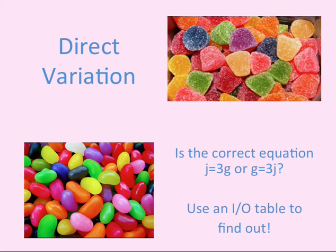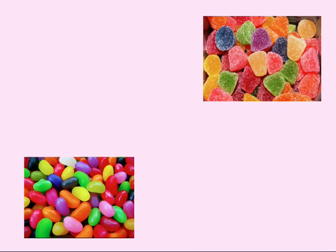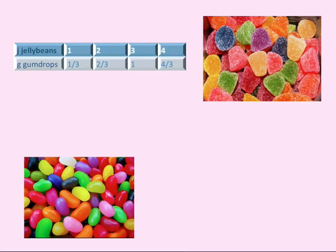If you're not quite sure which one is correct, it's always best to map out some data or ordered pairs in an input-output table. We can start with jelly beans as our independent variable and gumdrops as our dependent variable. Since we know that we want more jelly beans than gumdrops, we see that one pound of jelly beans would equal only a third of a pound of gumdrops. An appropriate equation in this situation might be G equals one-third J.